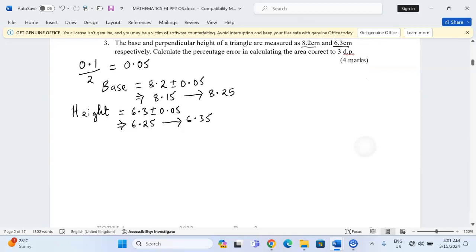Now with the limits in which the dimensions have been recorded, we can now go ahead to calculate area maximum. Generally, the area of a triangle is usually given by half base times the perpendicular height. So for us to get area maximum, we need half, which is a constant, multiplied by...